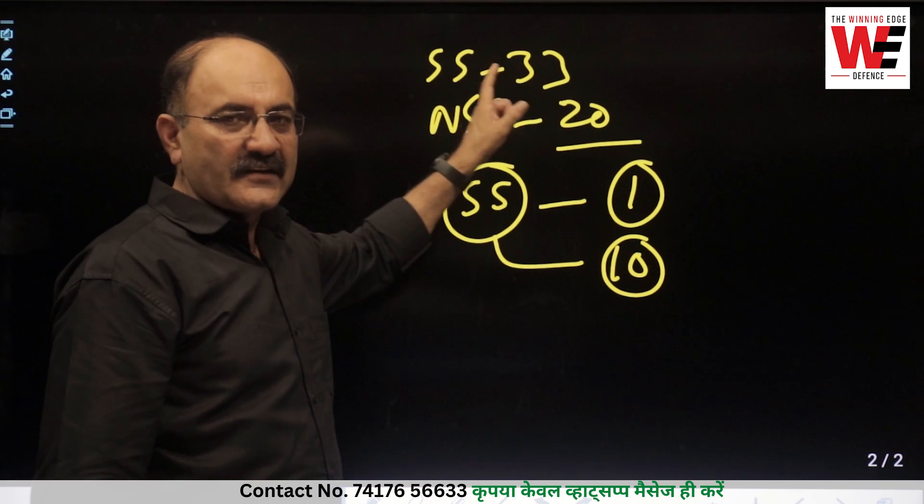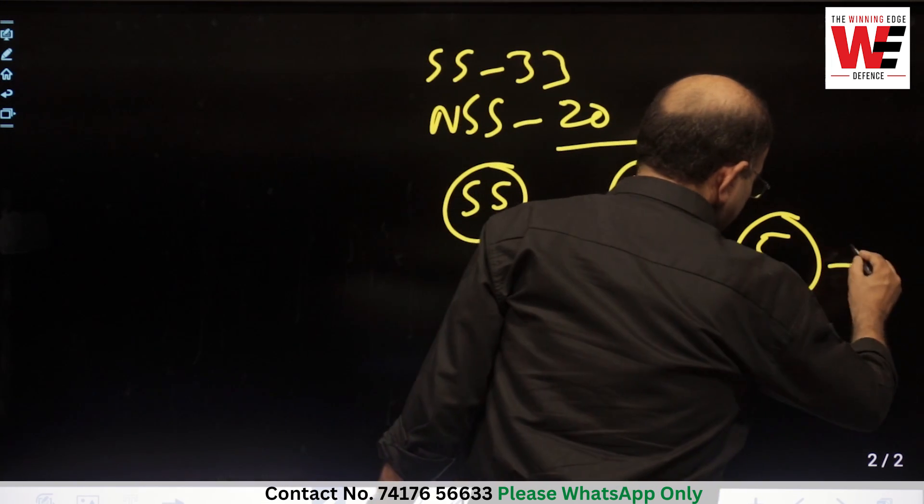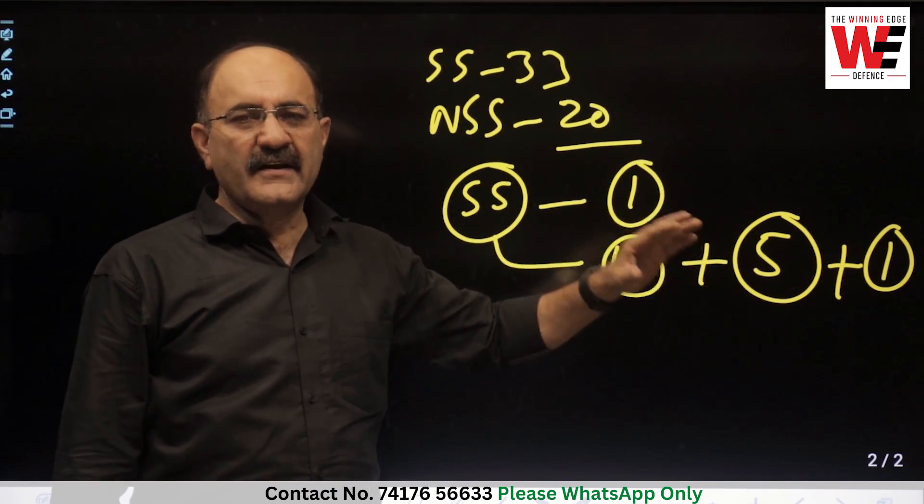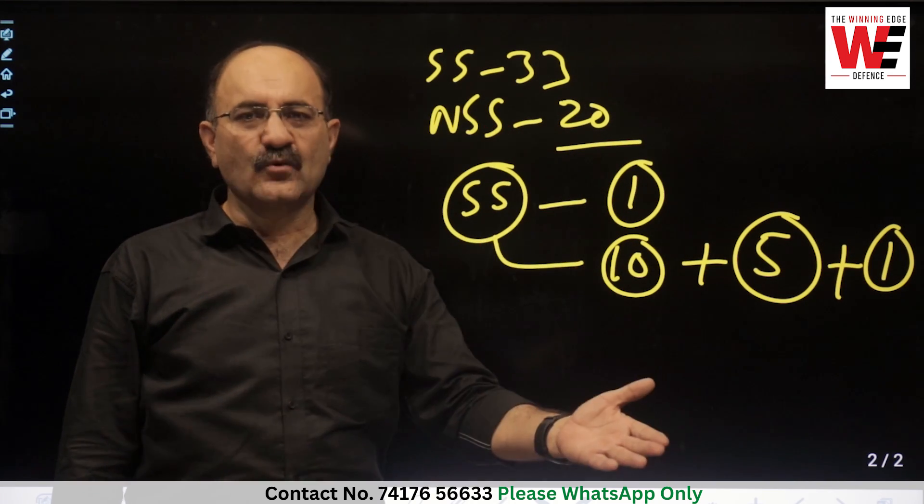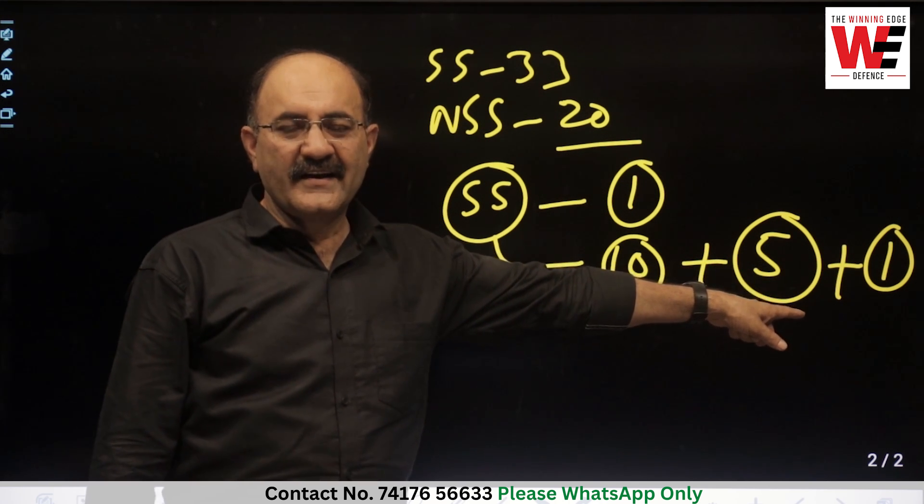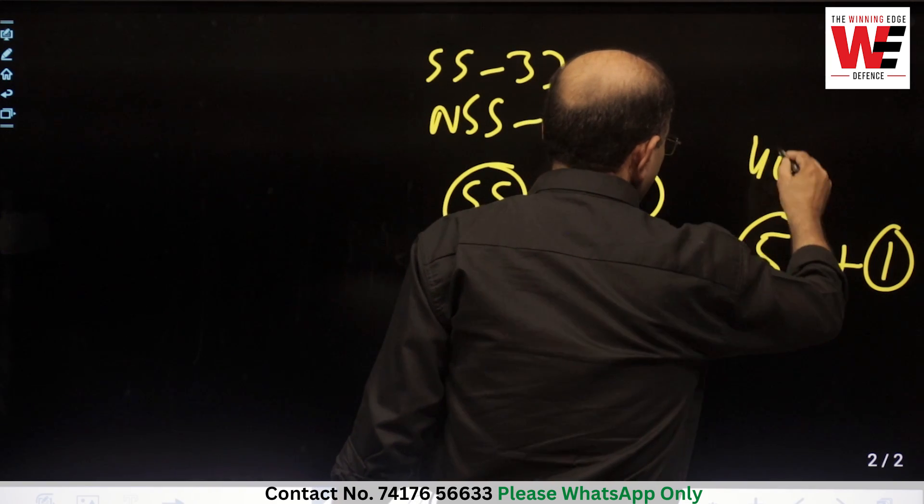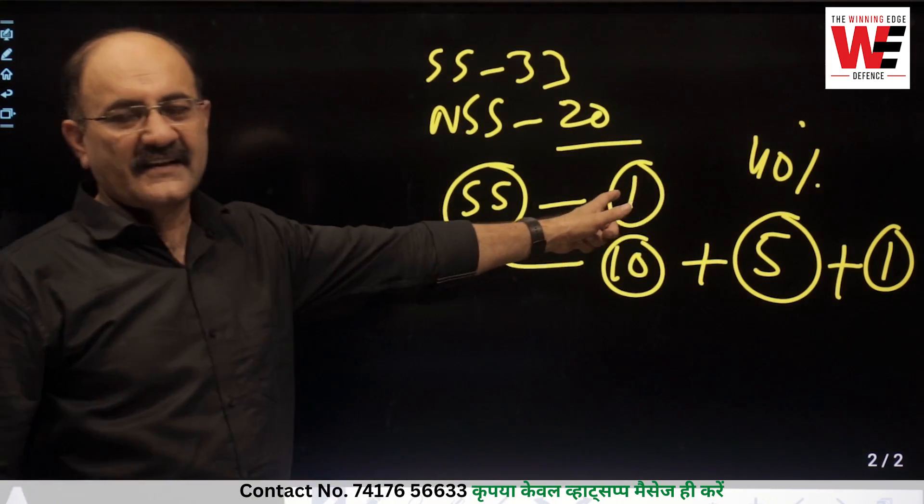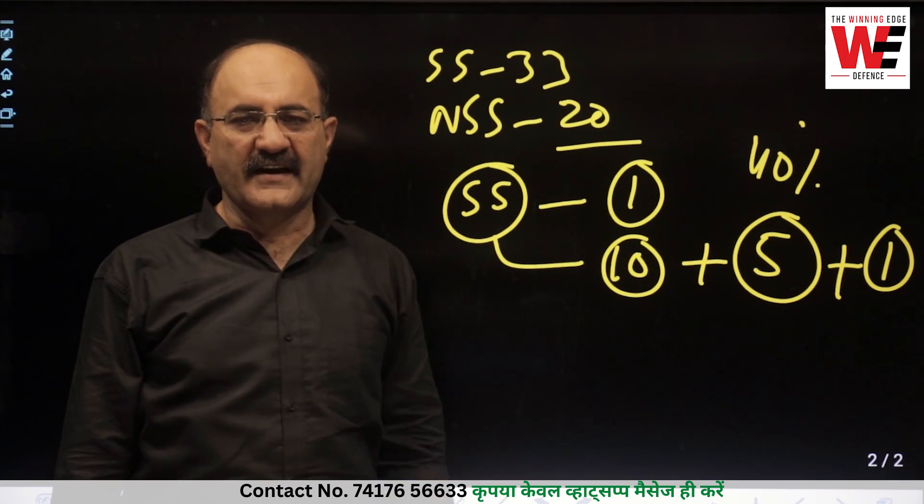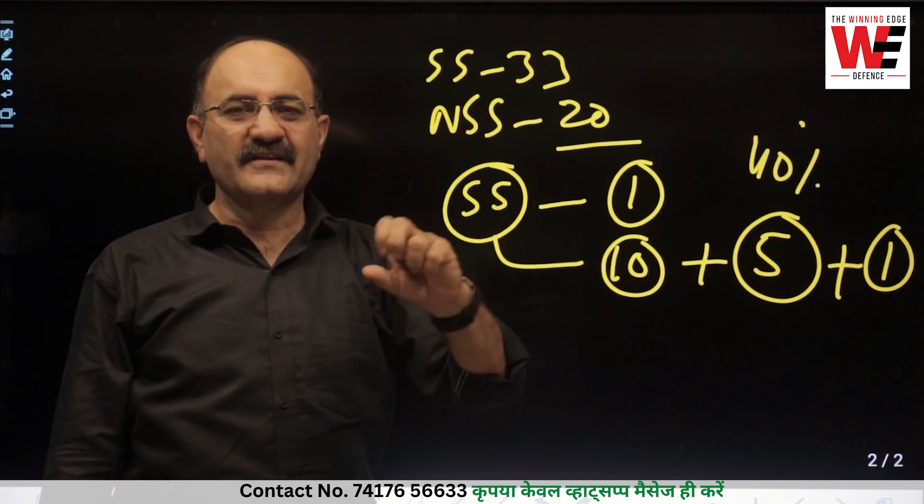If you have a New Sainik School plus Sainik School combination, then you can choose 5 New Sainik Schools. If you have 60% in one school, then you can choose the New Sainik School. If you have a Sainik School, you can choose 60% of the schools.